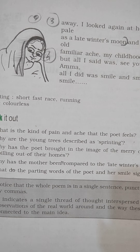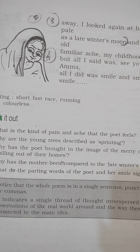Now, let me tell you the roll numbers. A few students from 12 Commerce and 12 Science are going to explain this poem in class. From 12 Science, roll numbers: 2, 4, 8, 13, 15, 20, 23, 26, 32, 33, 39, and 14.